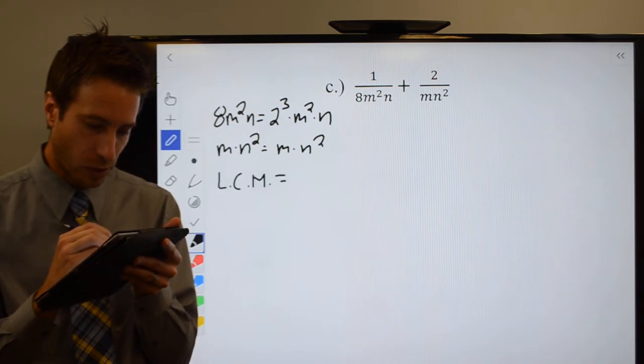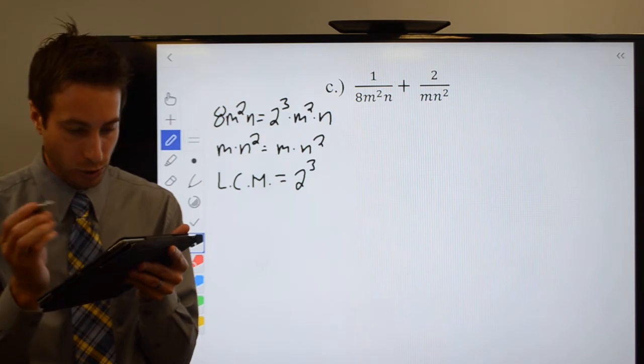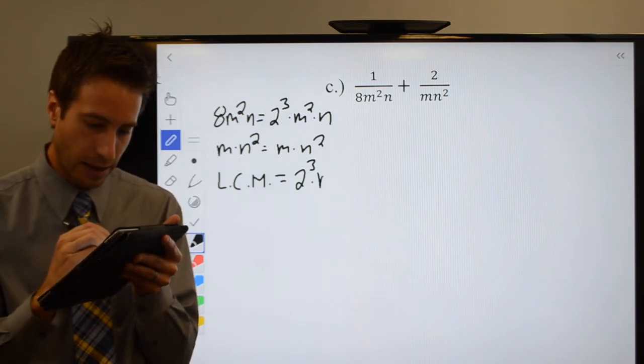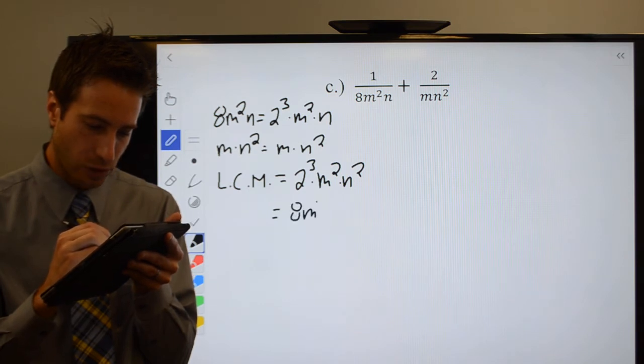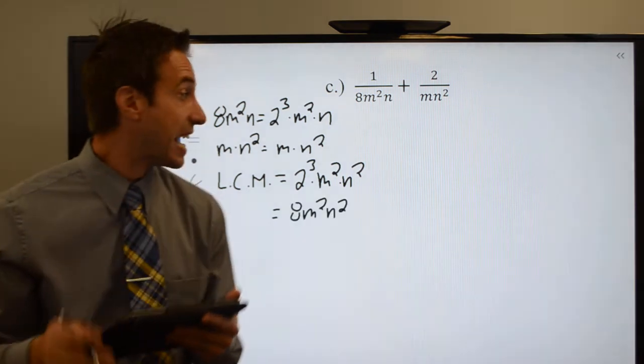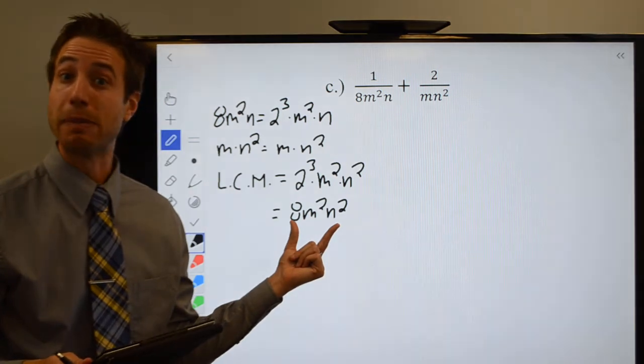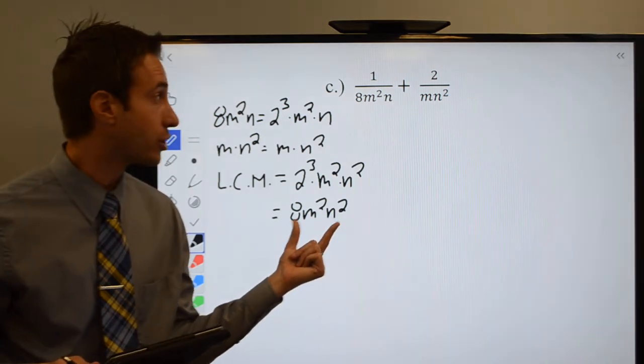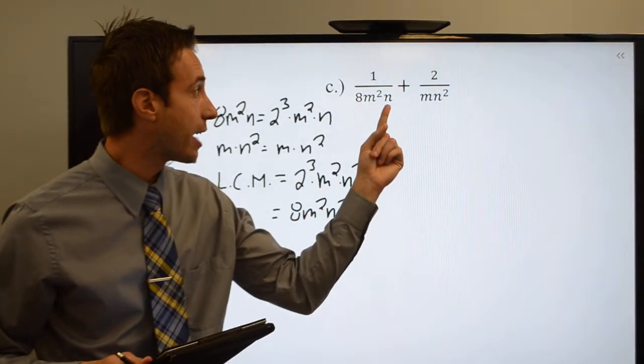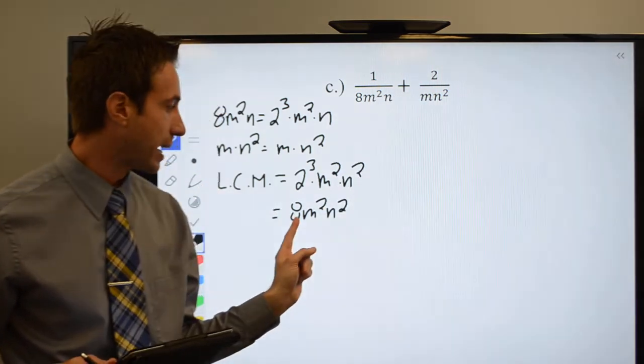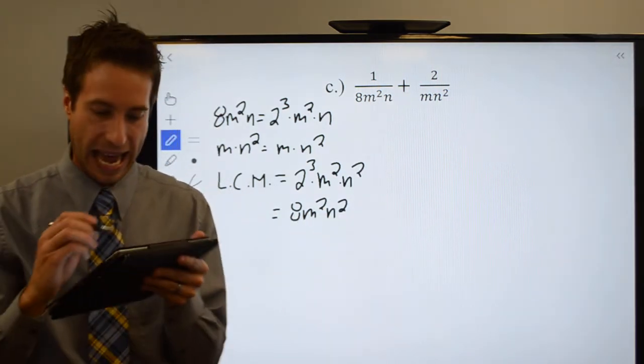LCM is equal to 2 cubed, which is 8, times M squared times N squared, so 8M squared N squared. Here we go. I need this to be my least common denominator. So I need to turn 8M squared N into 8M squared N squared. We'll multiply top and bottom by N.